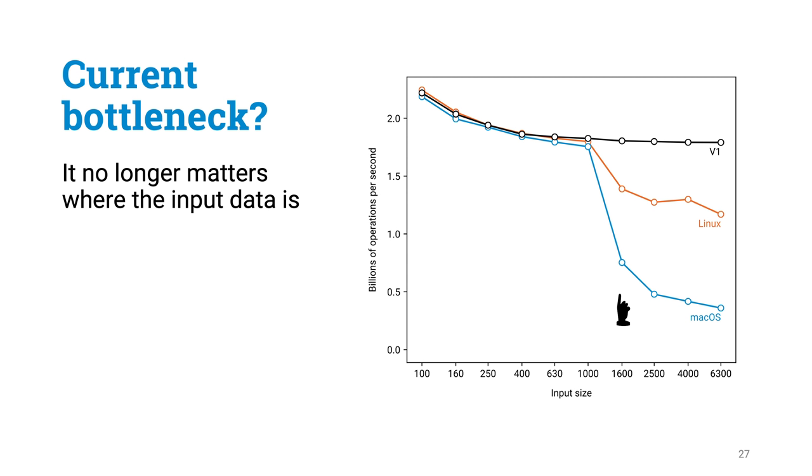And as we can see, this dramatic drop in the performance around the point where we ran out of L3 cache is simply gone. Apparently, memory is no longer a bottleneck in this current limitation.